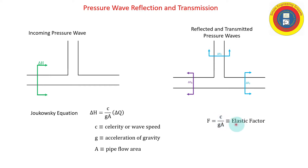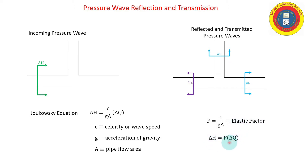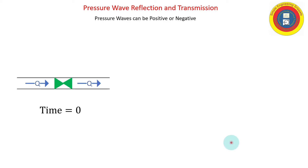We're going to refer to that grouping as the elastic factor and give it the symbol F. In general, F could be different in each one of the pipes at the junction. We will be writing the Joukowski equation as: delta-h equals F times delta-q.